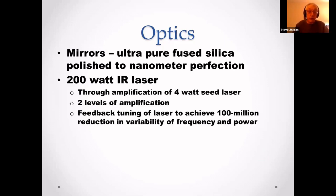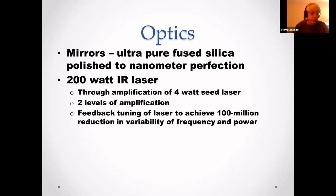LIGO has a 200-watt infrared laser that starts as a four-watt seed laser through two levels of amplification, with feedback tuning to achieve a hundred-million-fold reduction in the variability of frequency and power.